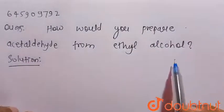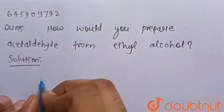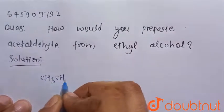How would you prepare acetaldehyde from ethyl alcohol? So we know that ethyl alcohol, that is CH3CH2-OH or C2H5OH, we have to convert this ethyl alcohol into the acetaldehyde CH3CHO.